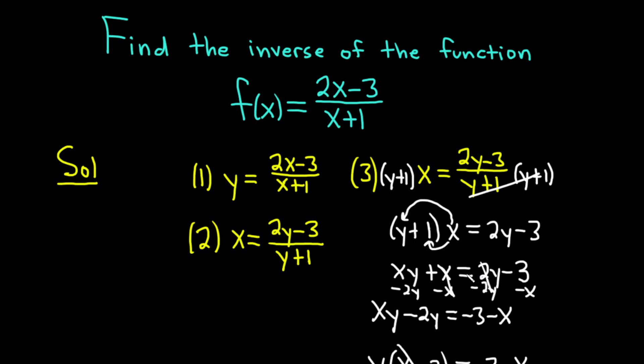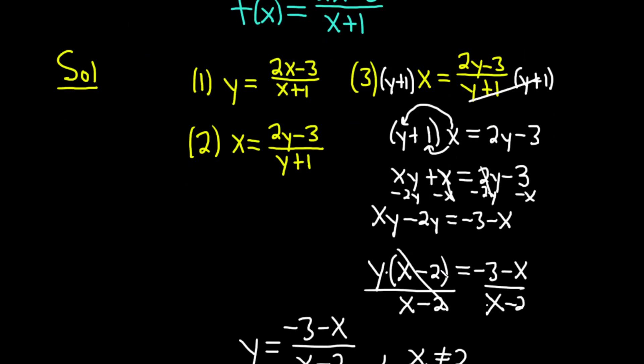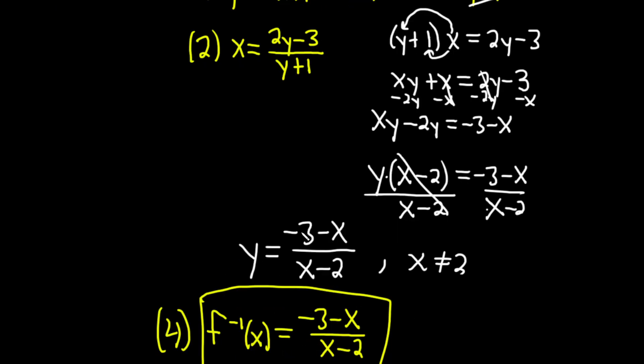So you have y's on both sides of this equation. Whenever that happens, what you want to do is you want to get all of the y's together on one side by themselves. And then that way you can factor out a y and solve. So we did that here. We had y times (x minus 2) equals negative 3 minus x. And because it was being multiplied by x minus 2, we did the inverse operation of multiplication, which is division. So we divided by x minus 2.